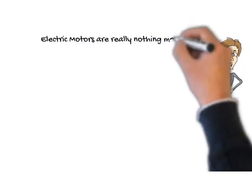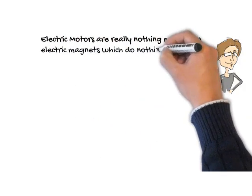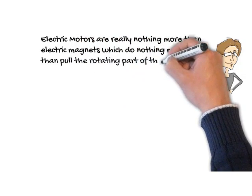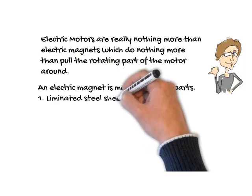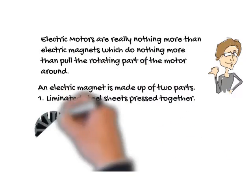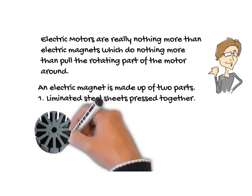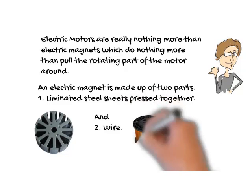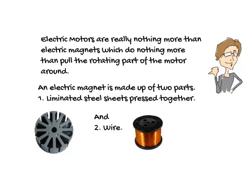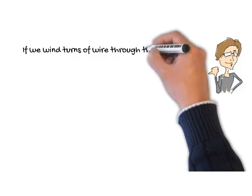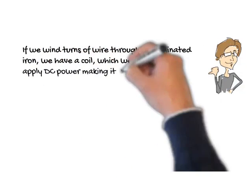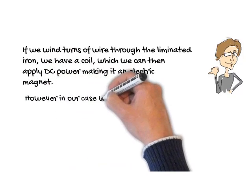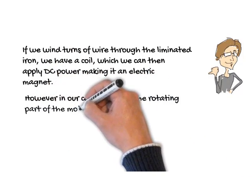Electric motors are really nothing more than electromagnets, which do nothing more than pull the rotating part of the motor around. An electromagnet is made up of two parts. Number one, laminated steel sheets pressed together. And two, magnet wire. If we wind turns of wire through the laminated iron, we will have a coil, which we can apply DC power to, making it an electromagnet.